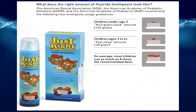The right amount of fluoride paste: for children under three, a rice grain-sized amount of approximately 0.125 grams. For children aged three to six, a pea-sized amount of approximately 0.25 grams. On average, most children use about eight times the recommended dose, so this should be stressed during oral hygiene instructions.